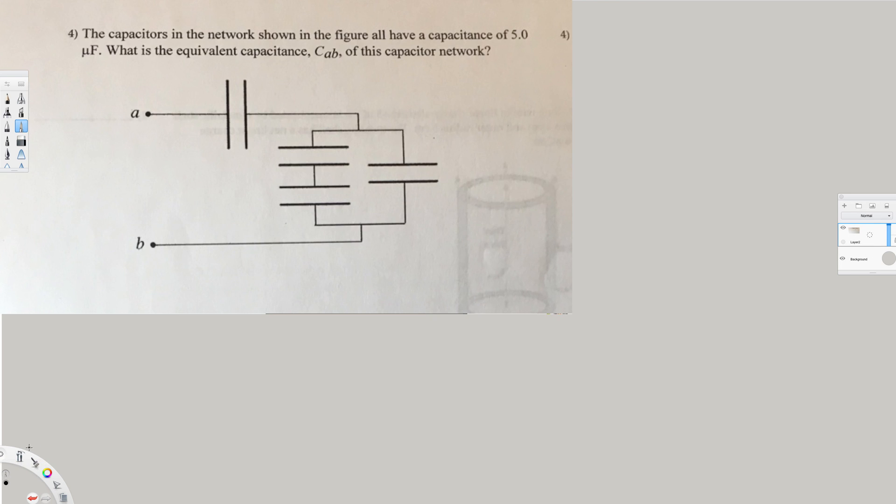Let's do this problem. The question is asking: the capacitors in the network shown in the figure all have a capacitance of 5 microfarads. What is the equivalent capacitance Cab of this capacitor network?